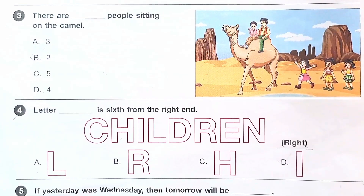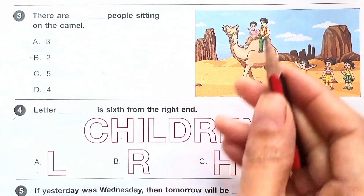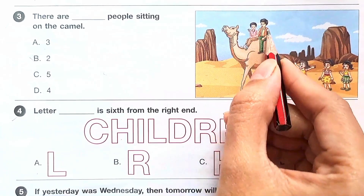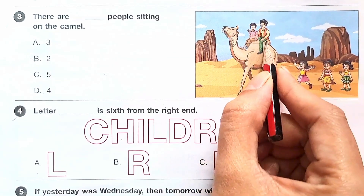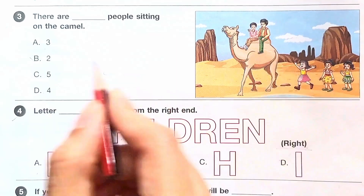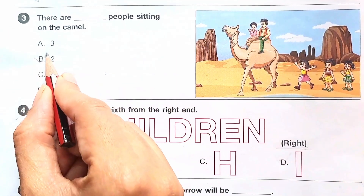Question number 3: there are dash people sitting on the camera. There are two people sitting on the camera. So the answer is option B.